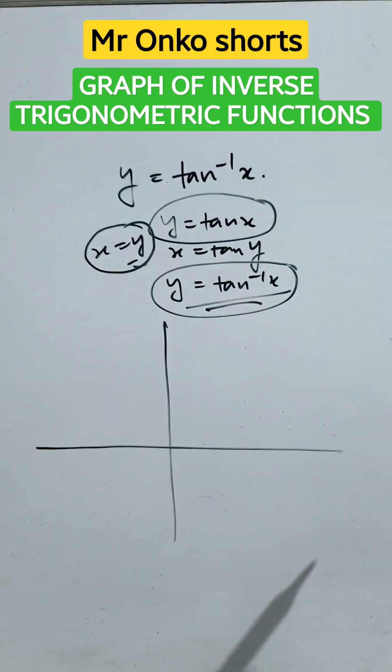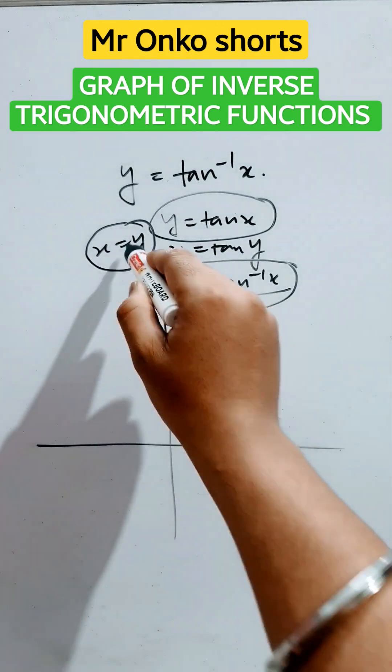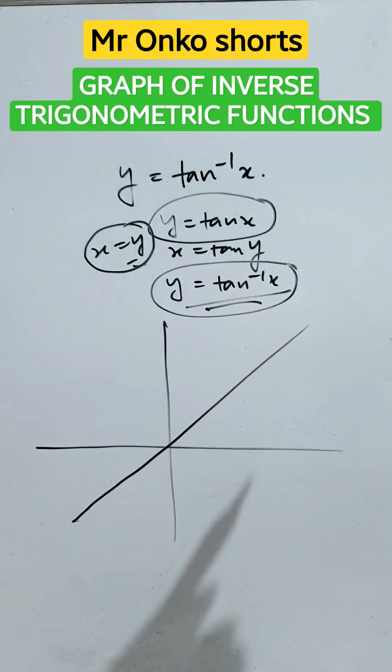So first of all, let's draw the Cartesian coordinates. Now, draw y equals x. It will pass through the origin like this.